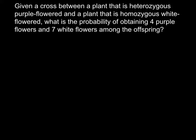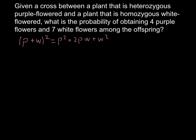Today I am going to explain how to use the theorem of binomial expansion to solve this problem. We have purple flower and white flower, so we put P for purple and W for white. If we expand (P + W)², we get P² + 2PW + W² — the same as the familiar formula (A + B)² = A² + 2AB + B².